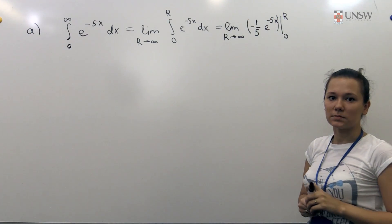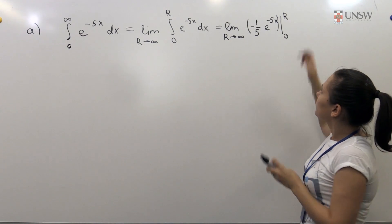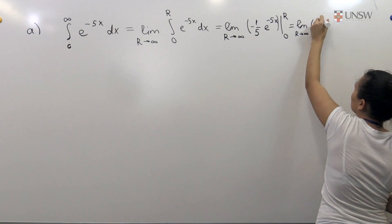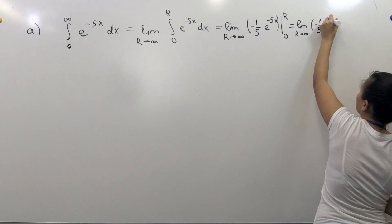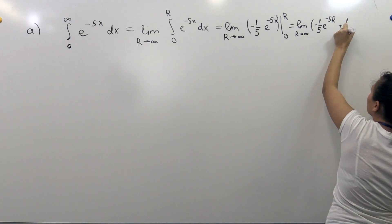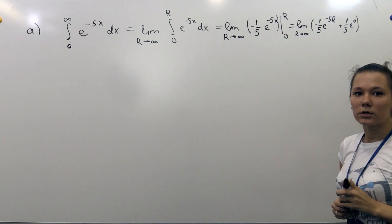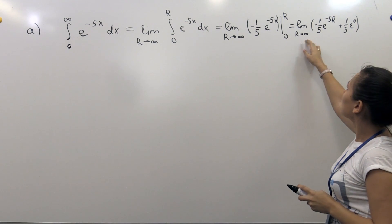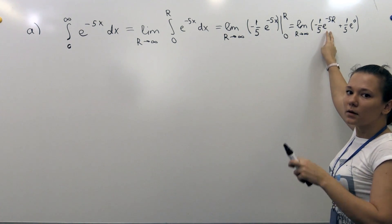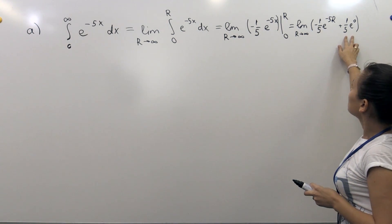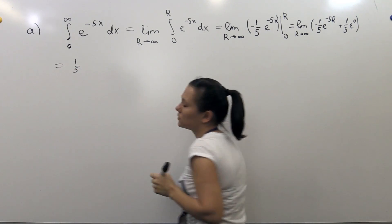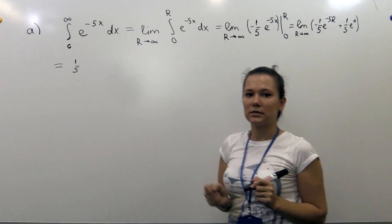I will use brackets so we don't confuse the minus signs. When we substitute r, we get the limit as r goes to infinity of minus 1 over 5 times e to the power of minus 5r. For 0 we get plus 1 over 5 times e to the power of 0. When r grows larger and larger we have the exponent to a negative power, so this term becomes smaller and smaller. Here we have a constant, so the limit equals 1 over 5, since e to the power of 0 is just 1.